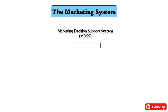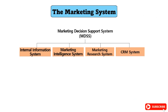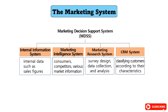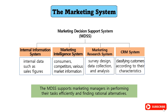The Internal Information System contains internal data such as sales figures, and the Marketing Intelligence System contains consumer, competitor, and various market information. The Marketing Research System is designed to be capable of survey design, data collection, and analysis. The CRM System enables differentiated marketing by classifying customers according to their characteristics. Together, MDSS supports marketing managers in performing their tasks efficiently and finding rational alternatives.